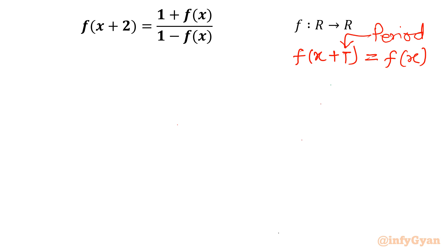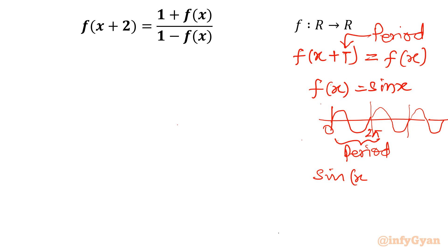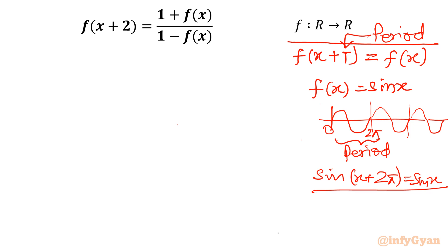Consider one easy example: if f(x) = sin(x), a periodic trigonometric function, then the graph of sin(x) repeats itself after every 2π interval. So 2π is called the period of sin(x), and that is why we write sin(x + 2π) = sin(x). Because of this, we can write f(x + T) = f(x).